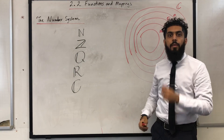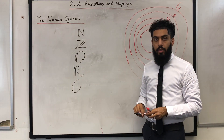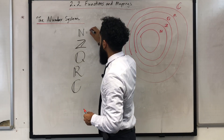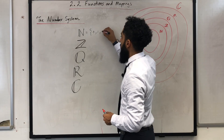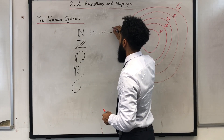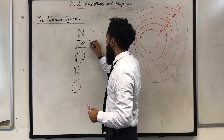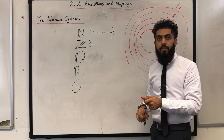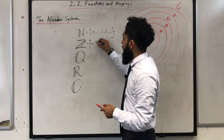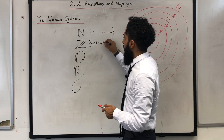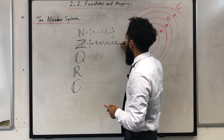Let's look at each number system in more depth. The set of natural numbers is zero and positive whole numbers: 1, 2, 3, ... The set of integers is negative whole numbers, zero and positive whole numbers: ..., -3, -2, -1, 0, 1, 2, 3, ...